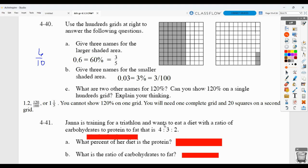And then, Jana's training for a triathlon and she wants to eat a diet with a ratio of carbohydrates to protein to fat that is 4 to 3 to 2. So in other words, for every 4 parts of carbohydrates in her diet, she wants 3 parts of protein. She wants 2 parts of fat. So, what percent of her diet is the protein? Well, her protein is the portion that's in the middle here, the 3. And it's going to be 3 out of the other portions added together, or all the portions added together. 4 plus 3 is 7, plus 2 is 9. So 3 out of 9. So 3 parts out of 9 parts of her food, she wants to be protein. So, that would be the same as 1 third. And if you take 1 and divide by 3, you get the decimal 0.3 repeating, which is 33.3 repeating percent.